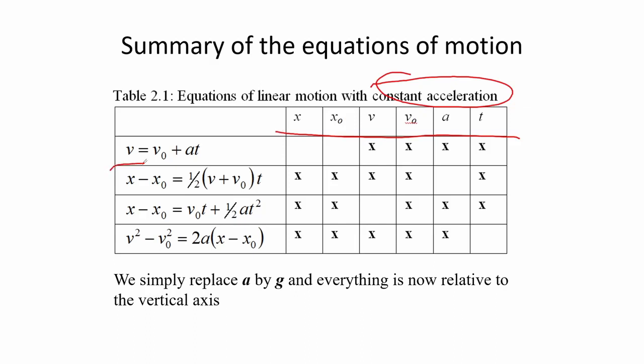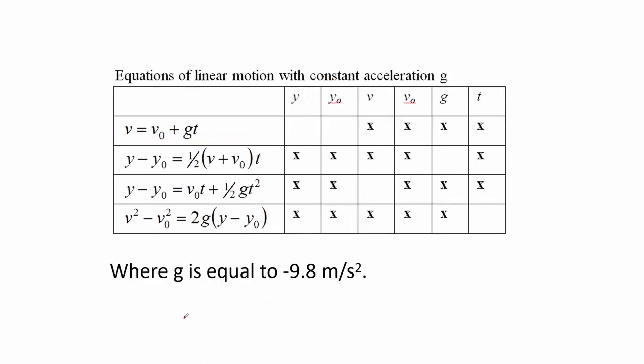For objects moving in the vertical like freely falling bodies, we simply replace the acceleration by acceleration due to gravity which has a symbol g. The rest of the parameters like x are changed into y to note that it is in the vertical. Here is the table for the equations of motion for objects moving vertically, where the value of g is equal to 9.8 meters per second squared.